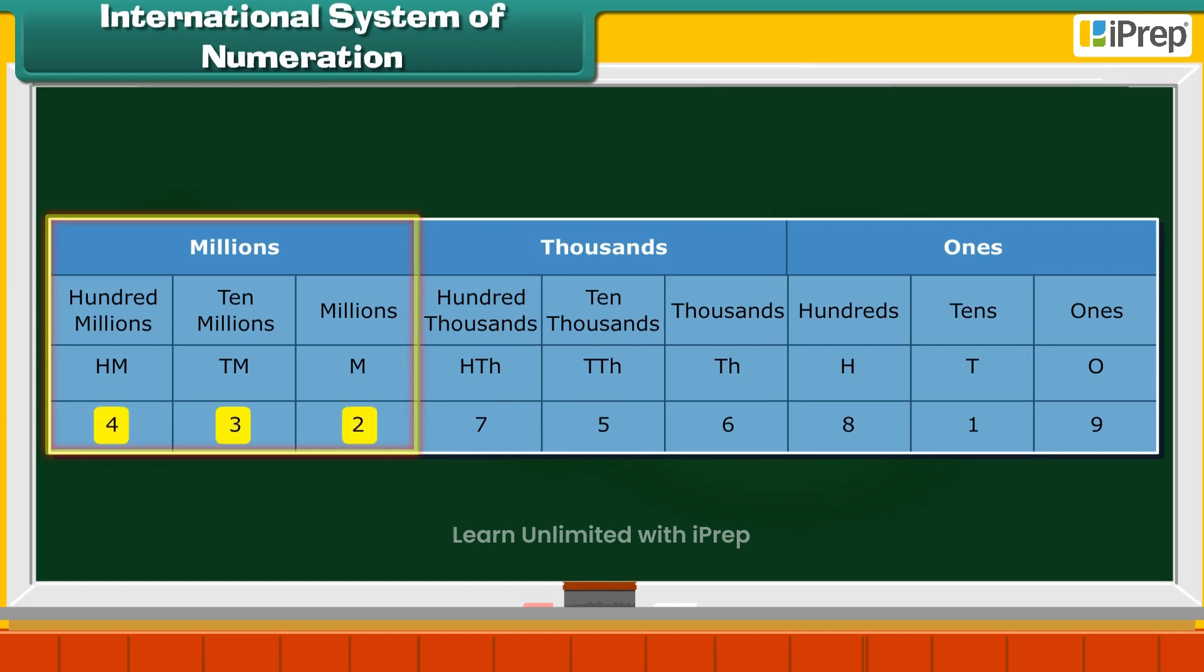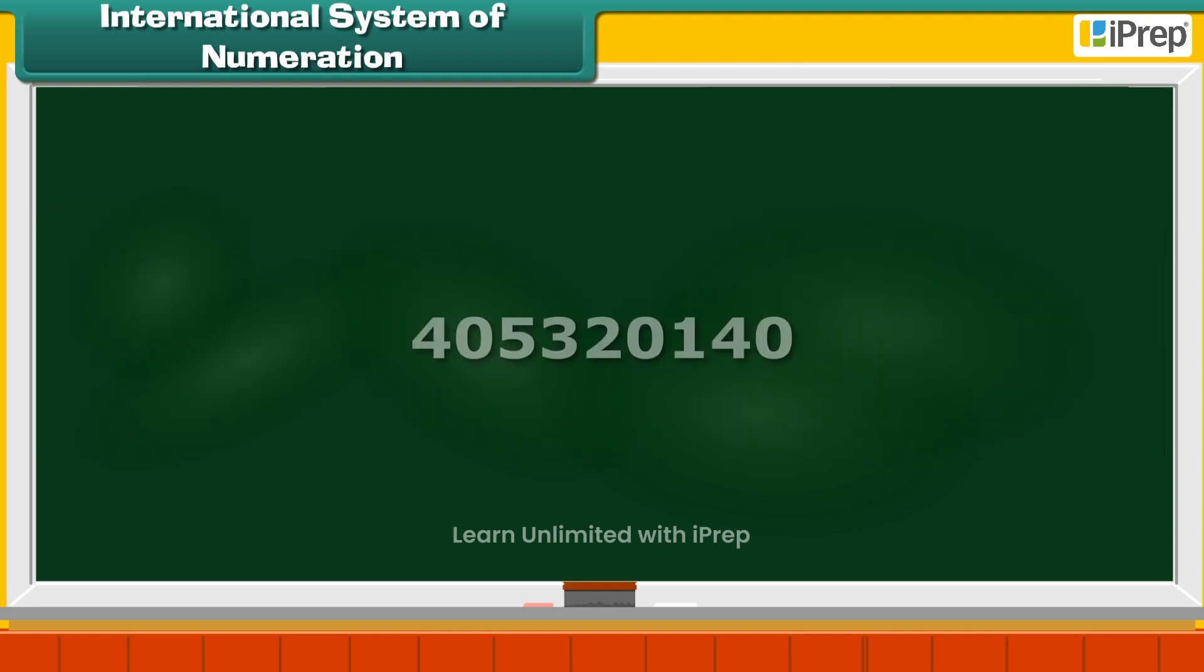The Millions group has the three digits: 2, 3 and 4. Their places are Millions, Ten Millions and Hundred Millions. Let us now read the numbers with the help of the International Place Value Chart.